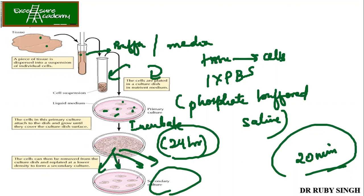This is how you make primary and secondary cultures. The more I explain it, the easier it sounds, but in reality it doesn't work out like that. Most of the time your primary cells die before adhering to the surface. What nutrients should you add? There is no certain answer — it's all hit and trial.